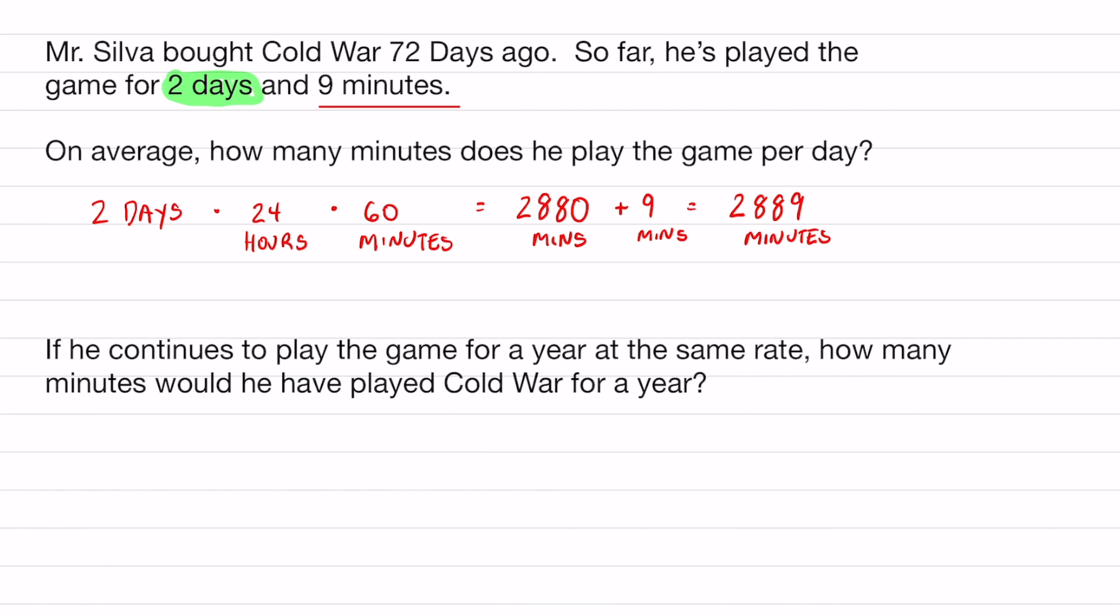However, I played that game for 72 days. So a really easy step. All I got to do next is divide that by 72 because I played the game for 72 days and I will get about 40.125 minutes. 40 minutes a day that I played that game for 72 days.